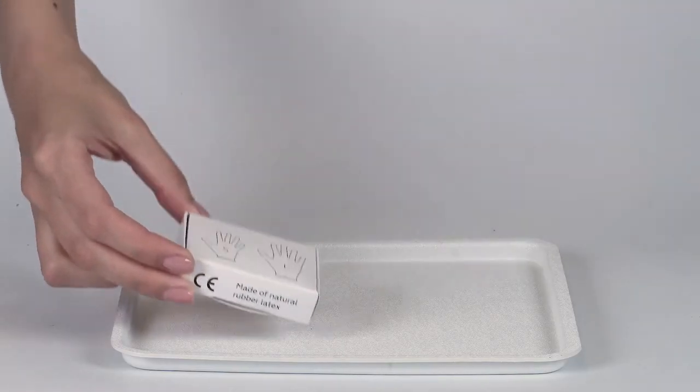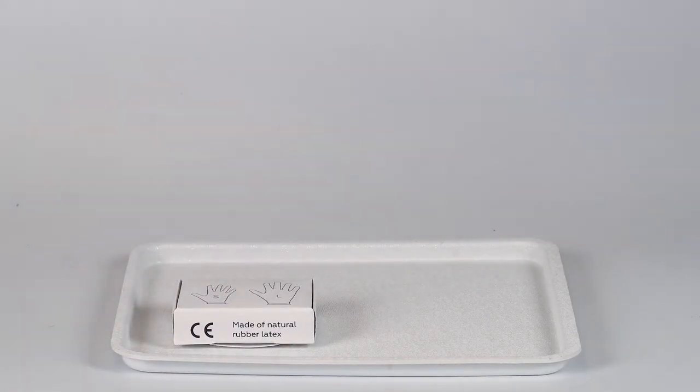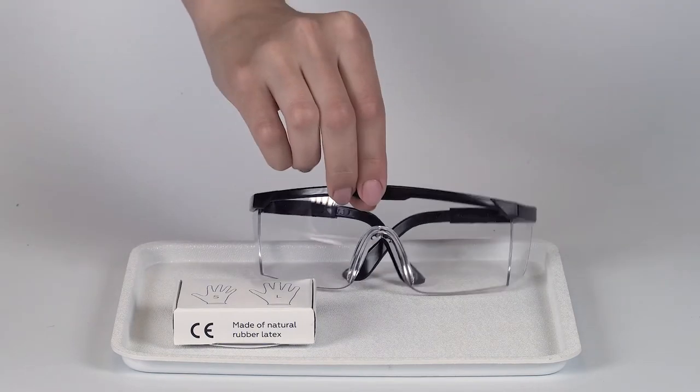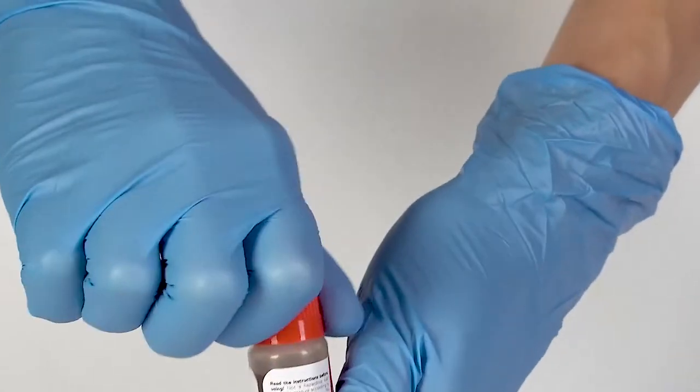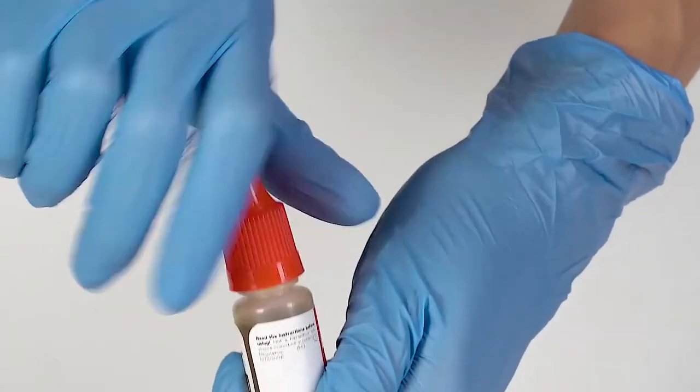Perform this experiment on a plastic tray to contain any possible spills. Don't forget to put on protective goggles before doing the experiment. To open a bottle containing a reagent, push the cap down and turn it.